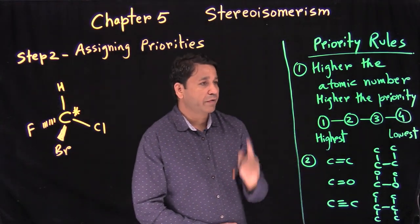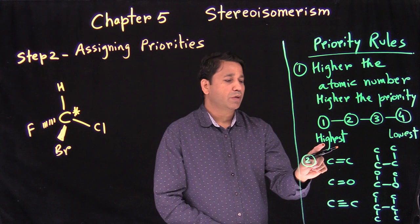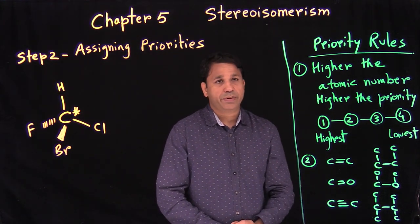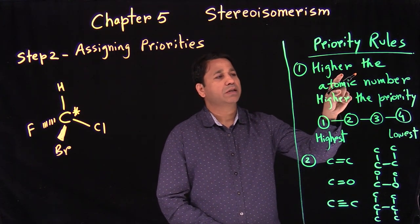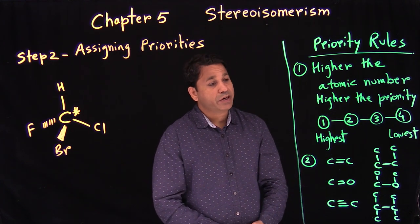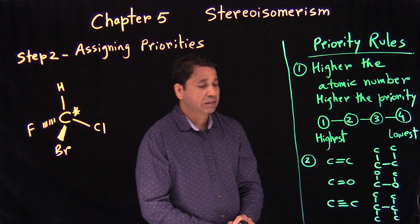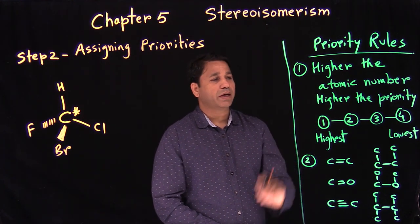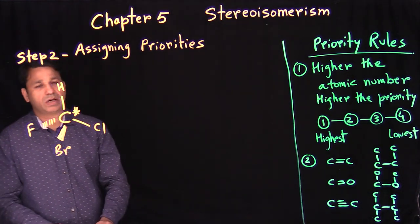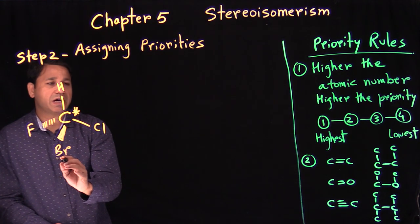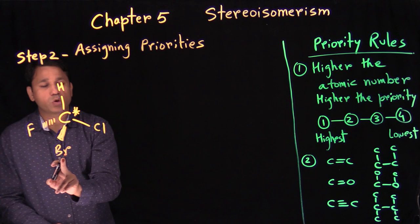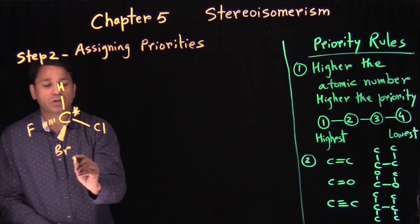Number one is your highest priority. You just have to look at the periodic table. The rule is: higher the atomic number, higher the priority. If we look at the periodic table and find which has the highest atomic number, that group gets the highest priority. Bromine has the highest atomic number out of the four groups, so bromine gets number one priority.